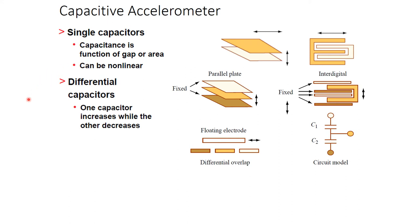Another configuration is the differential capacitance, which essentially requires three plates. The middle one is the moving plate and the top and bottom are the fixed plates. If it moves upward, the upper-side capacitance increases and the lower-side capacitance decreases. If the middle electrode moves downward, the lower-side capacitance increases and the upper-side decreases — or vice versa. This is called the differential electrode configuration.